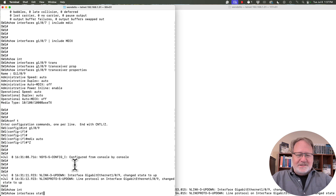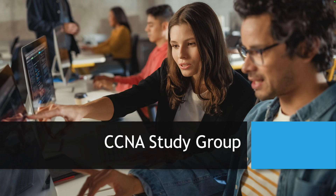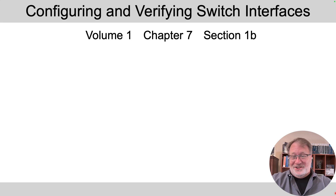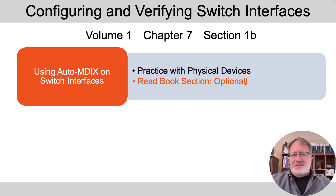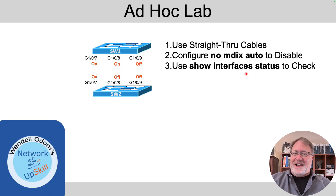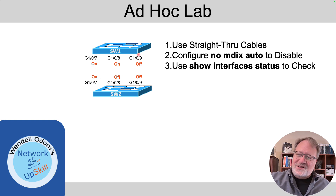To wrap up the demo, let's configure gig 1/0/9 — 'interface gig 1/0/9' — and add back the 'mdix auto' command so at least one end of the link has AutoMDIX enabled. Exiting config mode, we see log messages indicating the interface came up on switch 2. Running 'show interfaces status' confirms that gig 1/0/9 is now in a connected state.